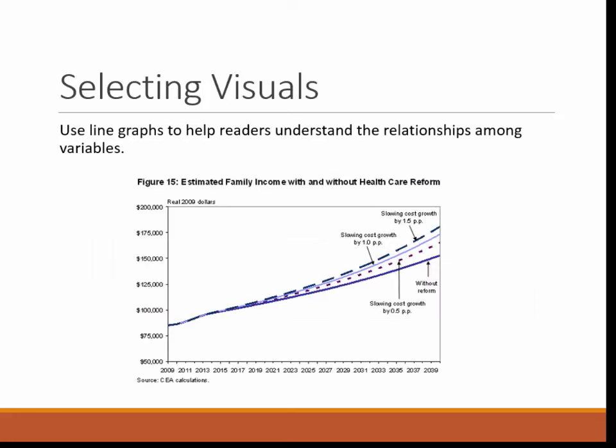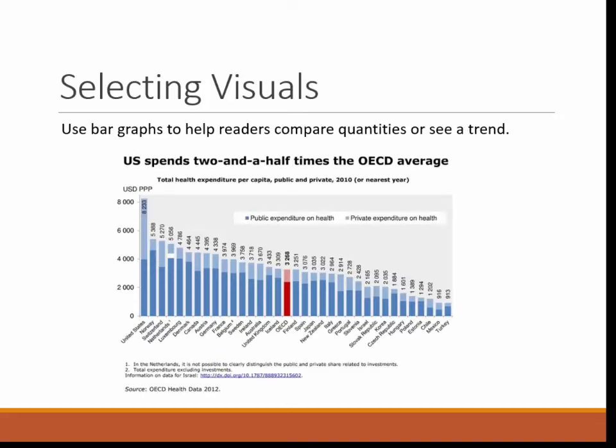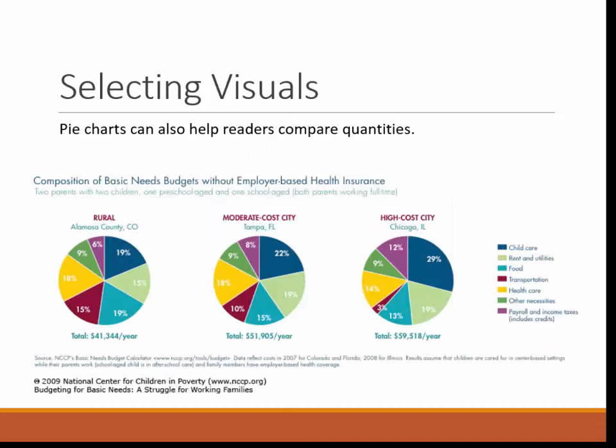Here, the line graph illustrates different scenarios — the reader can understand relationships among variables more quickly and easily than from written paragraphs. Bar graphs can be used to help readers compare quantities, and line graphs serve a similar function, so you may need to consider which type would be most effective. In this instance, the bar graph shows a clear contrast between an average and those which fall above or below it, whereas having the same data in a line graph would be difficult to read because of the number of variables. Pie charts can also help readers compare quantities — for example, charts showing a healthcare budget can illustrate how much money should be allocated for each expense.